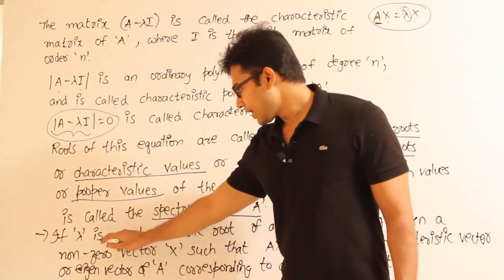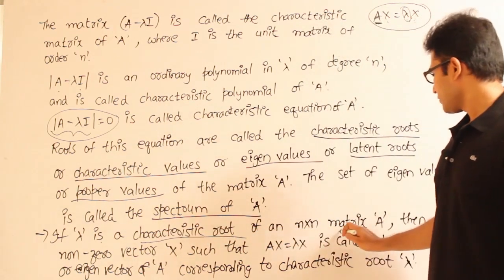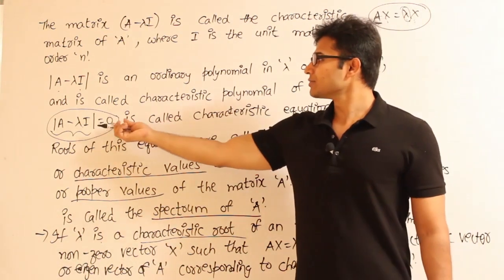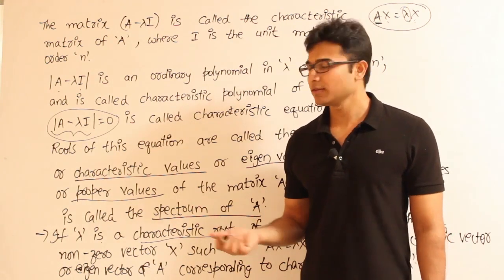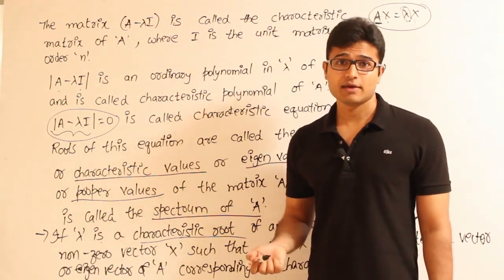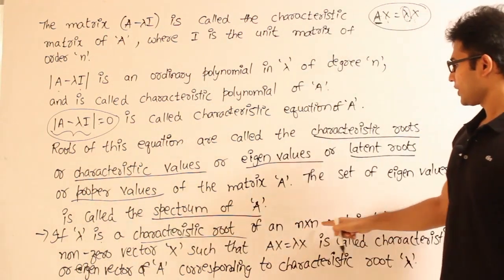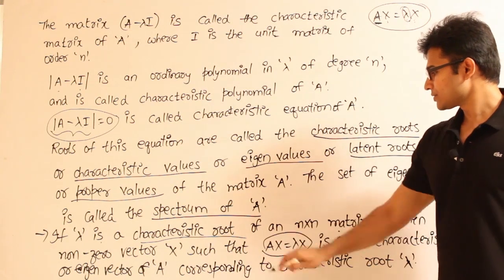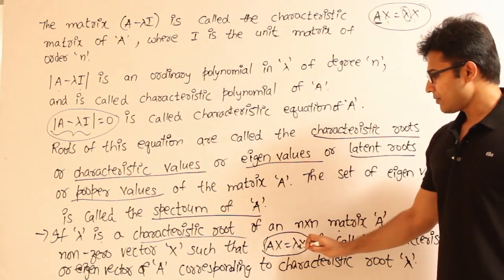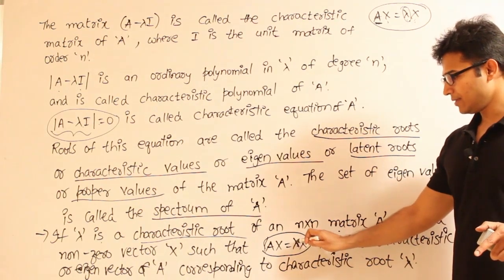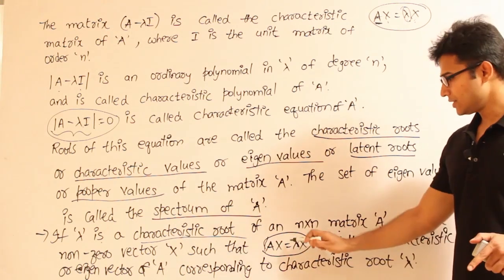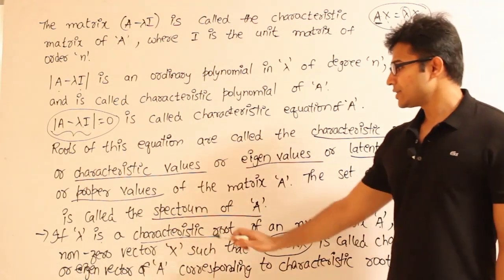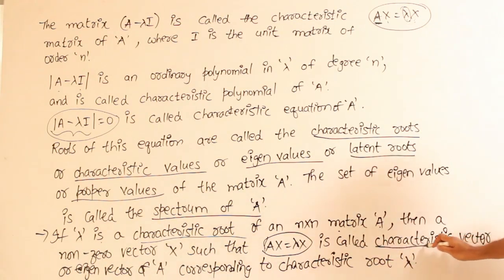If λ is a characteristic root of an n by n matrix A, then a non-zero vector X such that AX = λX is called a characteristic vector or characteristic value — also known as an eigenvector. After finding the eigenvalue λ, substitute it in to find the corresponding eigenvector X.